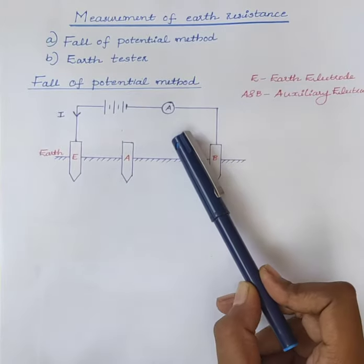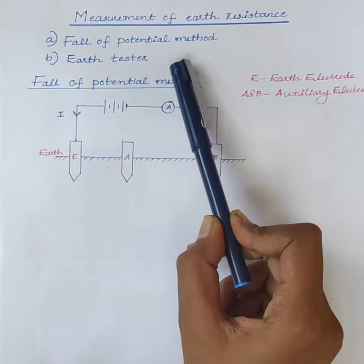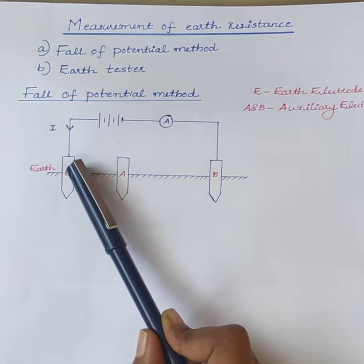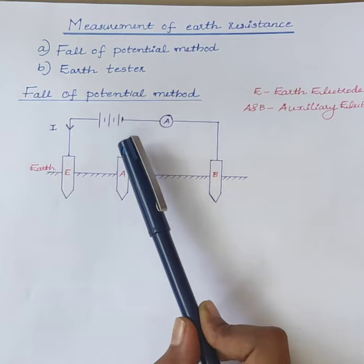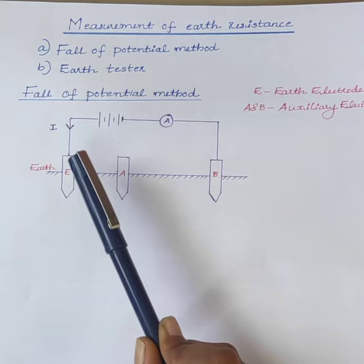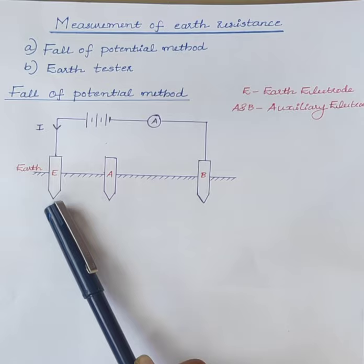Hello students, today we will discuss the methods for the measurement of earth resistance. We know that the resistance of earth is very low. Therefore, all the equipment of the power system is connected to the earth through an earth electrode. The earth protects the equipment and personnel from fault current. The fault current through the earth electrode passes to the earth and thus protects the system from damage.